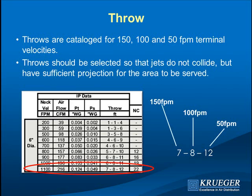Here's our catalog page. We do it in a unique way — we're the only ones that do it this way so we can fit our octave band data on the page. We list air velocities down the side; most people put them across the top. So we've got neck velocity, airflow in CFM, total pressure, static pressure, and three throw values. On the right you see throws at 150, 100, and 50 feet per minute, with a note at the bottom of the page explaining that.